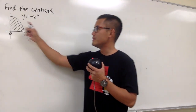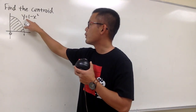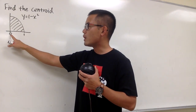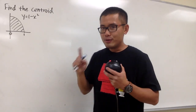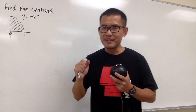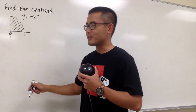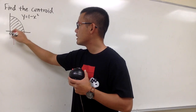We're going to find the centroid of this region. As we can see, we have the curve 1 minus x squared, and we just want from 0 to 1. Remember, we have to find the area of this region first, so let's go ahead and do so here.